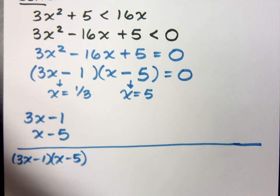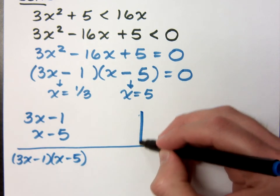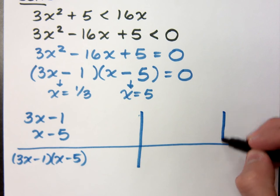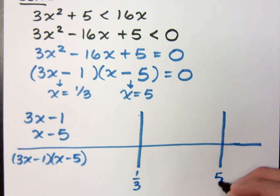And then (3x - 1)(x - 5). Now I've got some key points already set up here. I have two critical values: I have 1/3 and I have 5. Now what I'm going to do is just talk about the signs here, positive or negative.